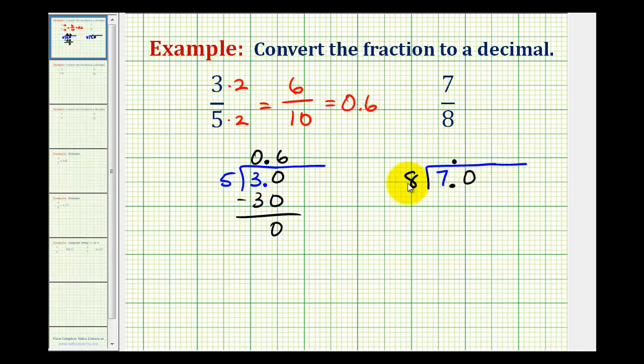And now we'll ask how many eighths there are in 70. Well, that would be 8, because 8 times 8 is 64. And we subtract, this would be 6. So we have to add another zero and bring that digit down. And now we want to know how many eighths there are in 60. That would be 7. 7 times 8 is 56. Subtract again, this would be 4.